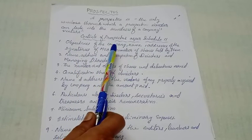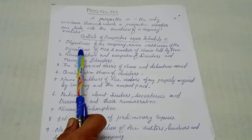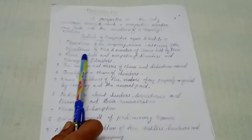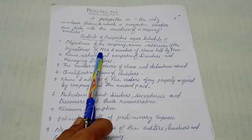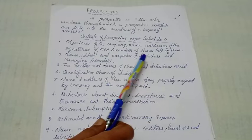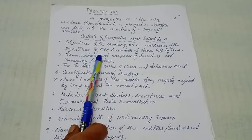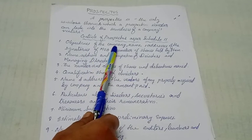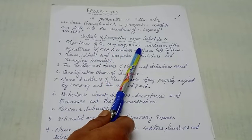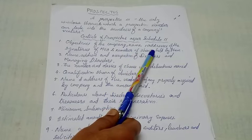What are all the contents of prospectus? The first one is the objectives of the company, the name and address of the signatories of the memorandum of association and the number of shares held by them. So the first content of the prospectus is the company objectives. The second is the name and address coming from the memorandum of association and number of members.